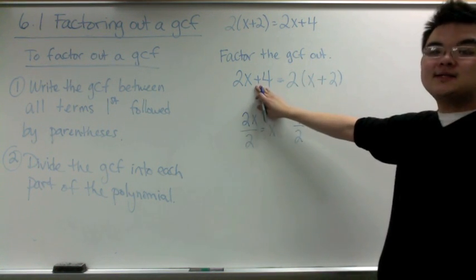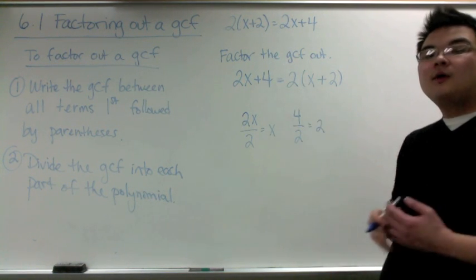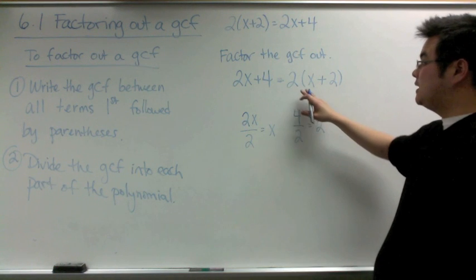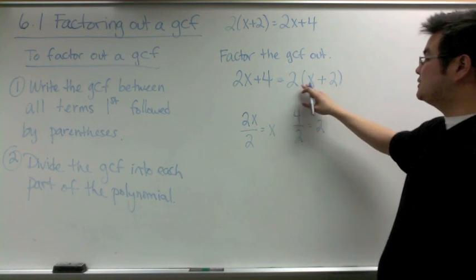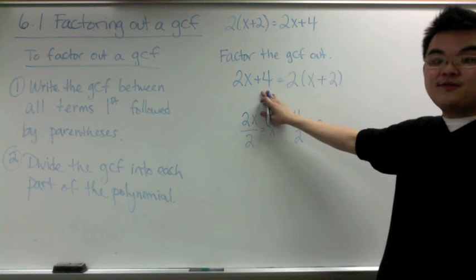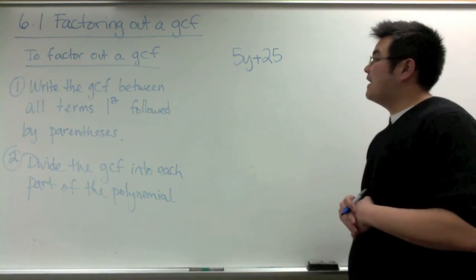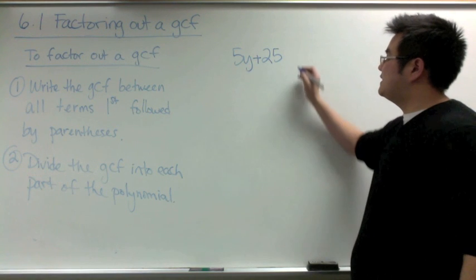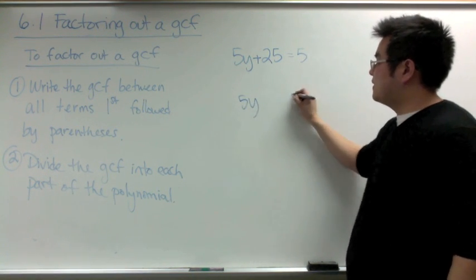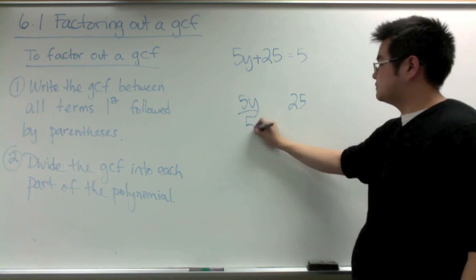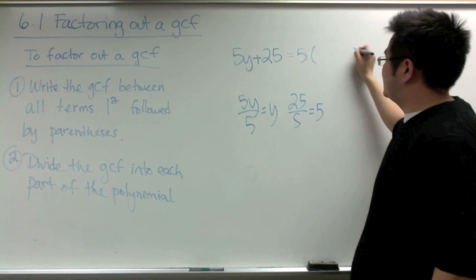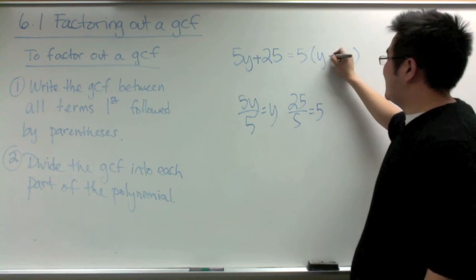If there were a minus sign, we would write x − 2. Whenever you're factoring out a GCF, you can always check your answer by distribution. So 2 times x is 2x and 2 times 2 is 4. Next example: factor the GCF out of 5y + 25. The GCF is 5, and dividing gives us y and 5, so the result is 5(y + 5).